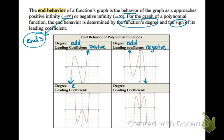Notice how the end behavior can also be the same. The graph on the left has both ends going up, and the graph on the right has both ends going down. That means the equations matching these graphs have even degrees — second power, fourth power. If both ends go up, the leading coefficient will be positive, and if both ends go down, the leading coefficient will be negative.